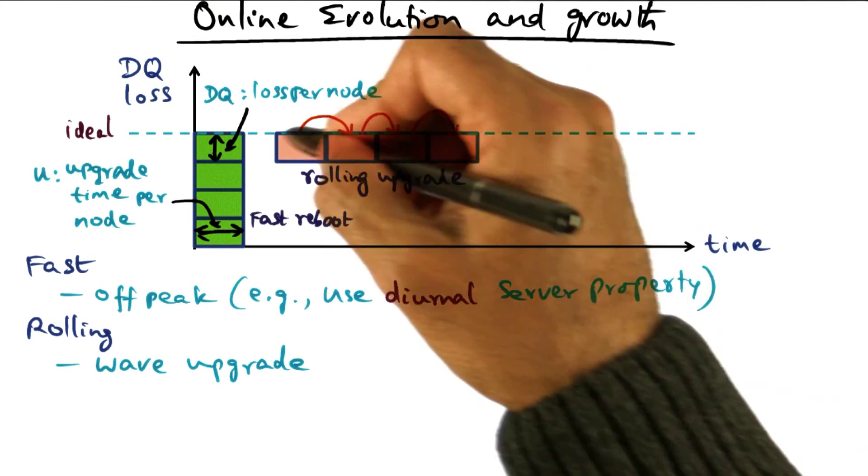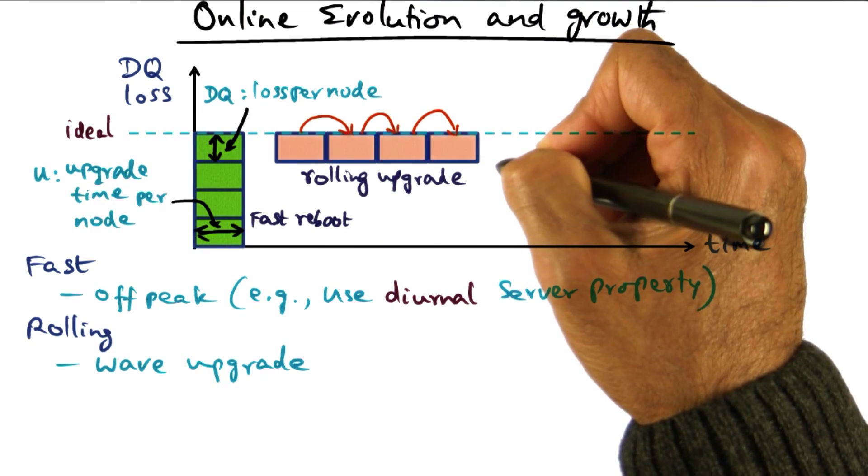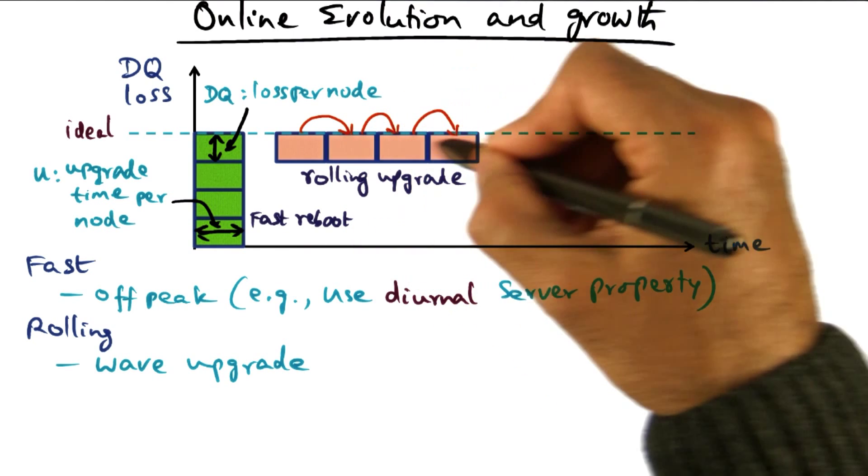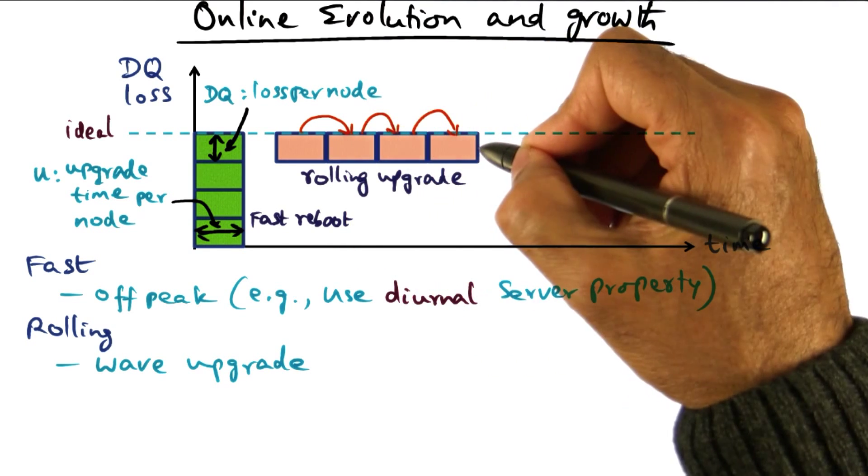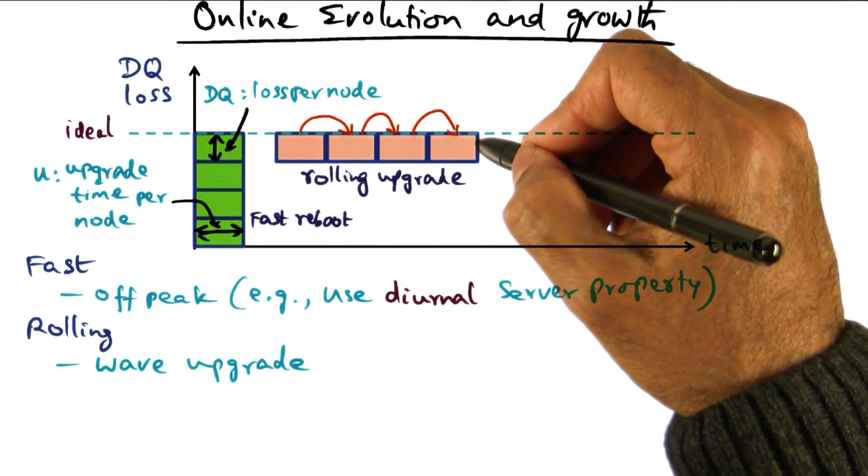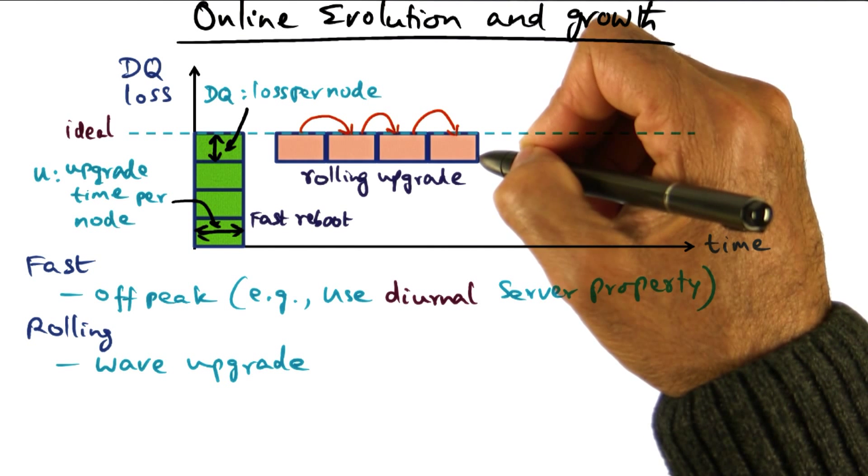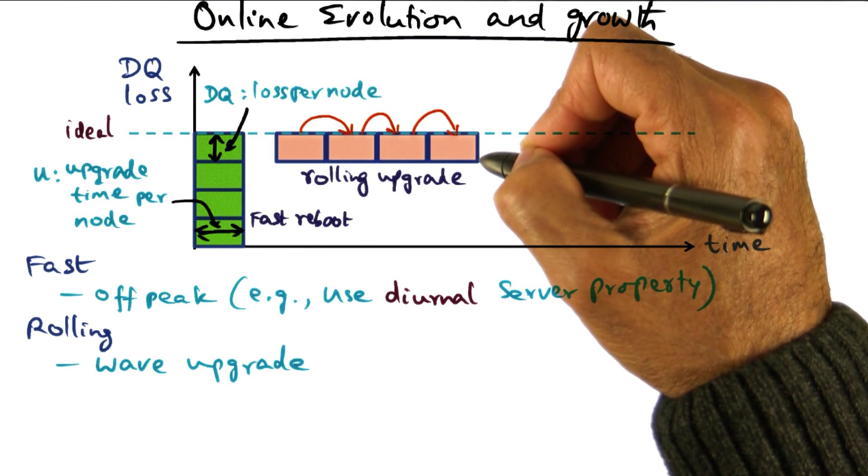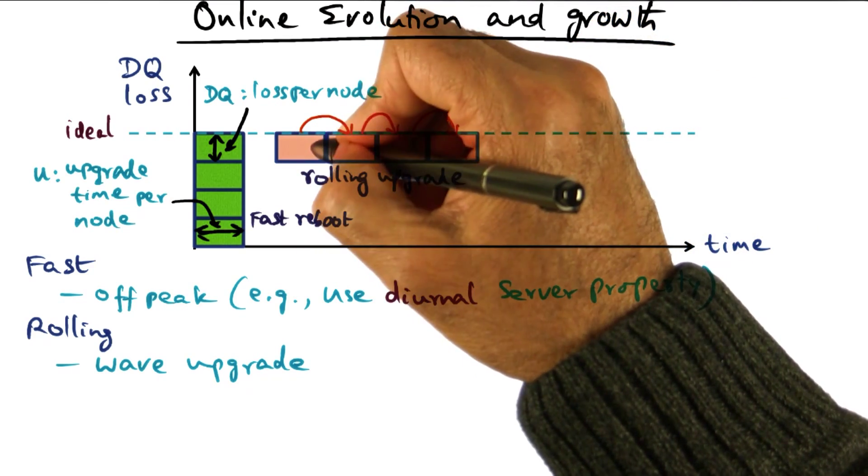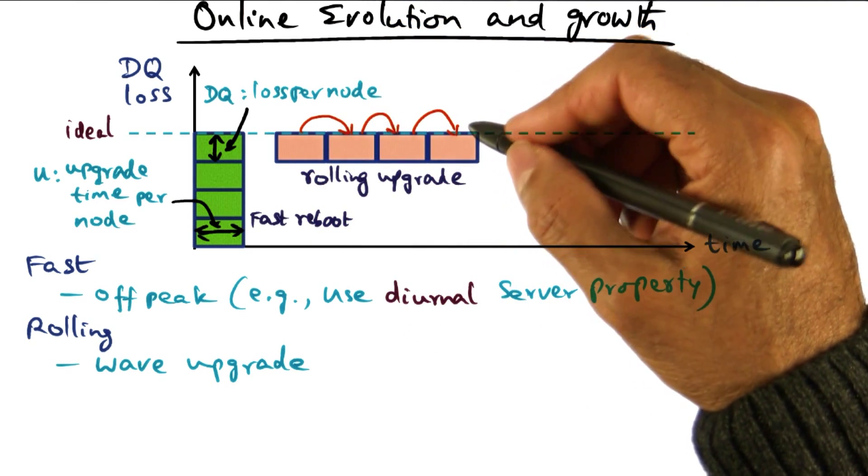But for the entire duration of time, the duration of time here is N times U, because U is the upgrade time per node. And the upgrade, because it is a wave upgrade is going to last for N times U time units, where N is the number of servers being upgraded in this fashion. But during the entire time, service is available, but in every U units of time, there's a DQ loss of this much bounded by this area during the entire upgrade process.